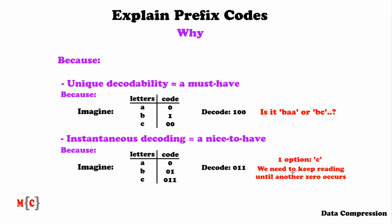However, as you've probably noticed, we need to keep waiting or reading until another 0 occurs. This is a bit annoying. What would have been desirable is that there would only be one option when reading this string, so we can directly decode it. As soon as we read a 0, we want to directly decode it as an A, because we know that this option will work, rather than keeping track of all still-possible options.